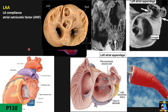The appendage participates in these functions when we have volume or pressure overload on the left atrium. When we block it — such as with the Watchman device or by surgically removing it — it affects both left atrial compliance and ANF secretion.